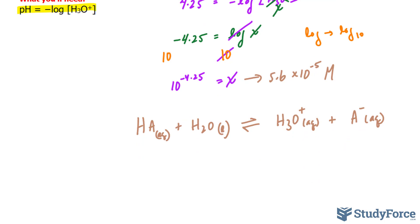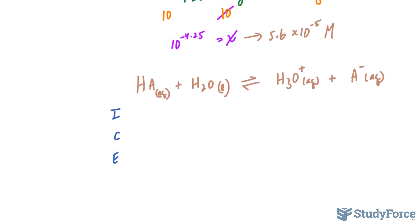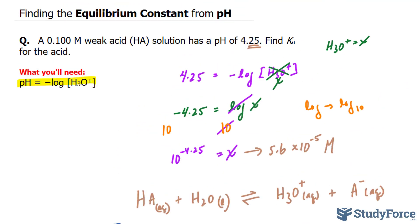Now forming an ICE table, we have ICE—initial, change, and equilibrium concentration. We already know the concentration of hydronium: it's 5.6 times 10 raised to the power of negative 5. And we can assume that since this is a weak acid, notice we're told it's a weak acid.